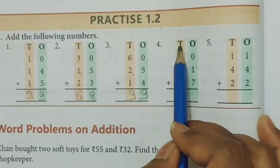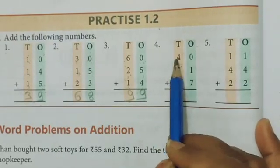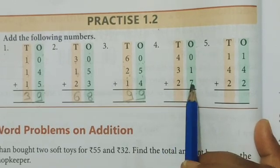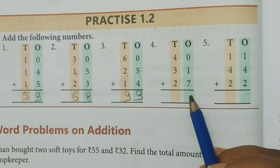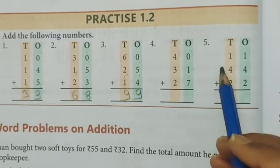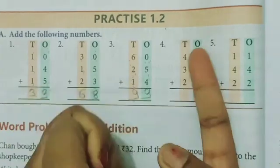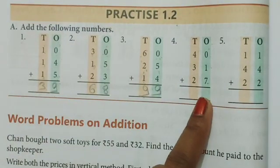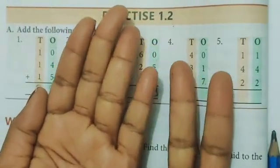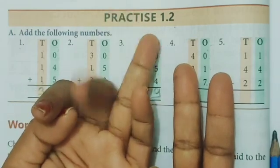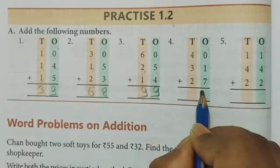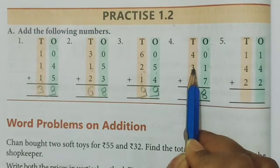Now say me fourth number. T for tens, O for ones. Read this number: 40, 31, 27. Which column we will solve first? Ones. 0 plus 1, that means 1 will be there. And 1 plus 7, 1 ke aage 7 fingers count karo, that means 1 plus 7 will be 8.